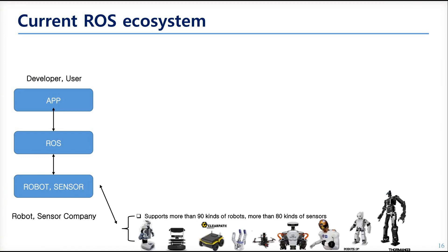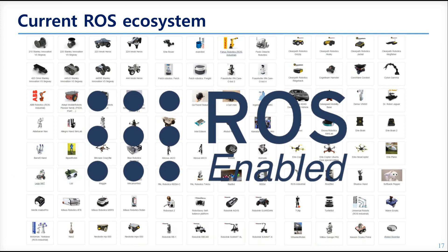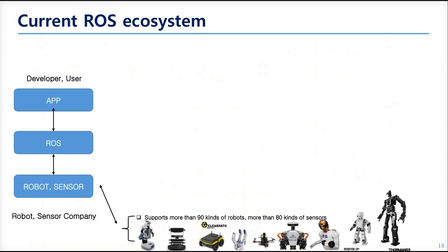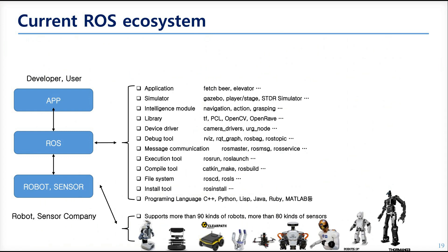In the ROS ecosystem, hardware-wise, over 90 kinds of robots and over 80 kinds of sensors are registered in the ROS community. When you think about a smartphone, there are many models from many companies, and the companies have many choices for selecting sensors to build a phone. But as you know, a robot needs more kinds of sensors, and has many more kinds of shapes and functions.